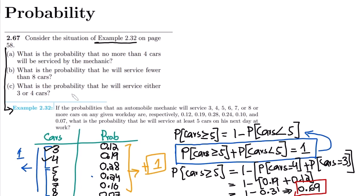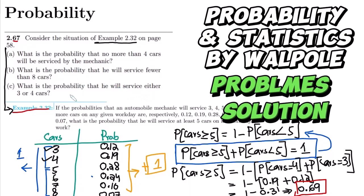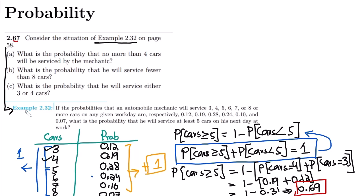We will solve question 2.67 in our upcoming video, so you are expected to grasp all the concepts illustrated in example 2.32. In the previous video we saw the solution of example 2.32 and how the limits sum to 1. Now let me solve the different parts of question 2.67.